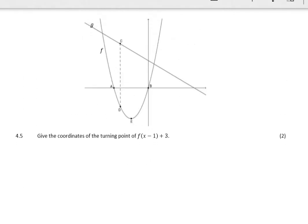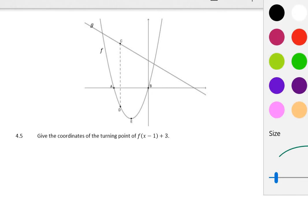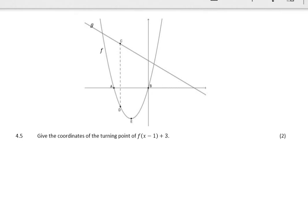Right, on to the next one. Give the coordinates of the turning point of f(x-1) plus 3. Now, we haven't seen one of these before, I don't think. What does this mean? What does it mean when you take f(x), and instead of having f(x), you minus 1 from x? Now, hopefully we all know that that is a translation. One unit, and if you're minusing 1, it's one unit right. And if I'm adding 3, it's 3 units up.